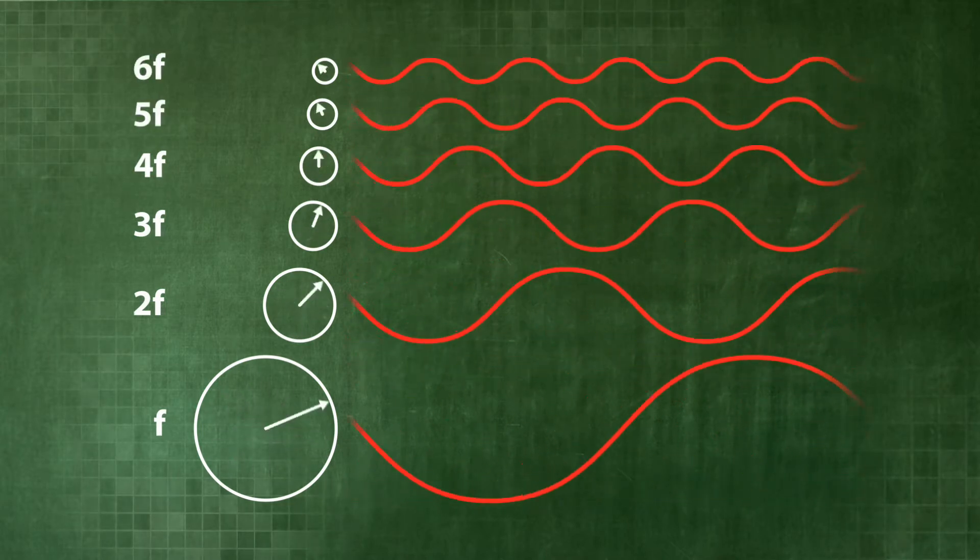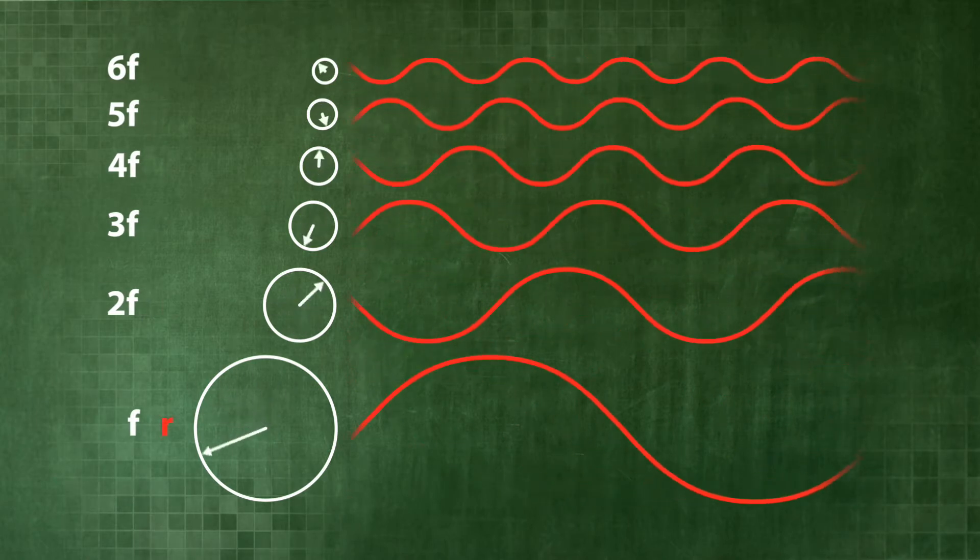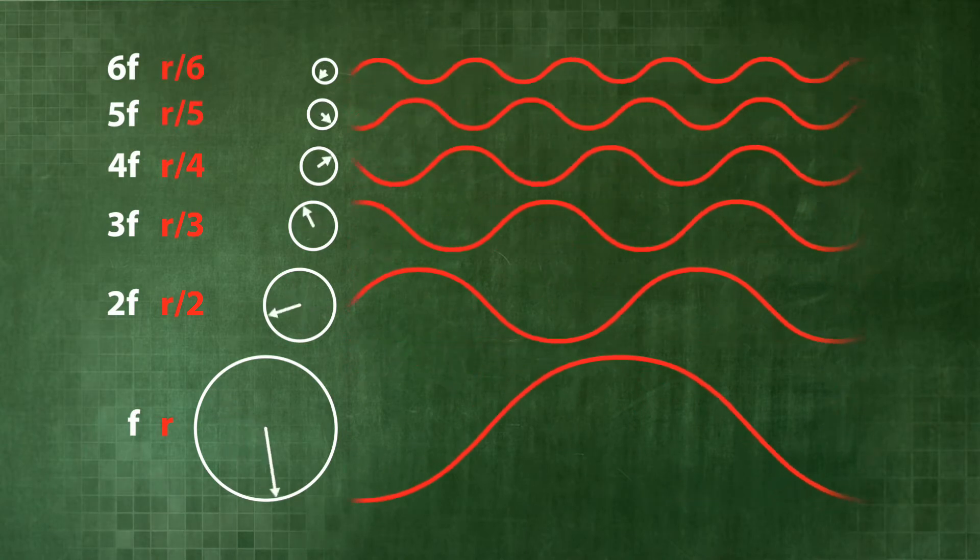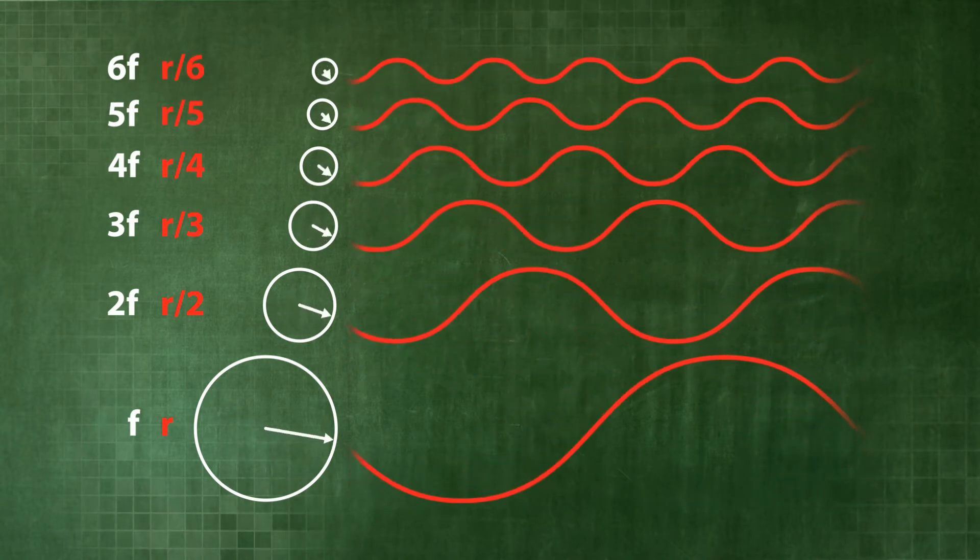The amplitudes of the spinning wheels decrease to one-half, one-third, one-fourth, one-fifth and one-sixth of the amplitude of the fundamental frequency f.